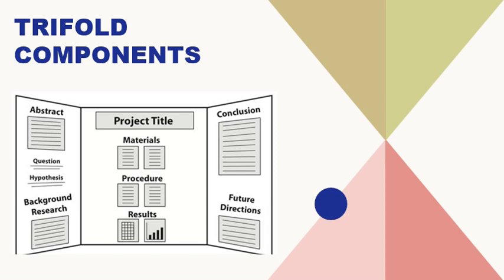So starting off with section A, which has the abstract, the question, the hypothesis, and the background research. So we have to have an abstract about your project. What's the question? What's your testable question? What's your hypothesis? What research or background research have you done about this project that you are going to be presenting?